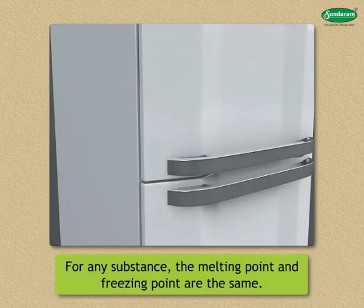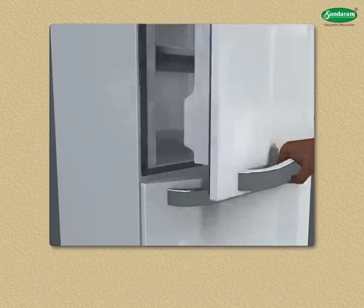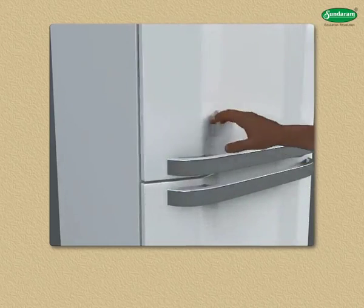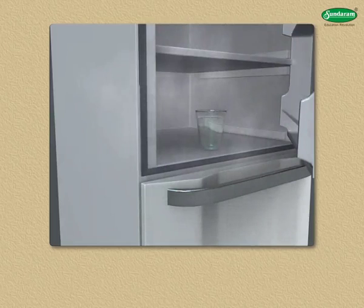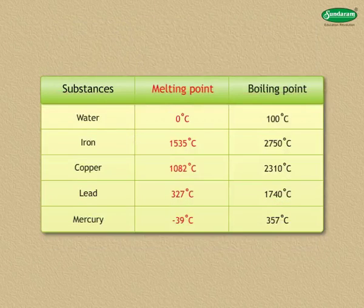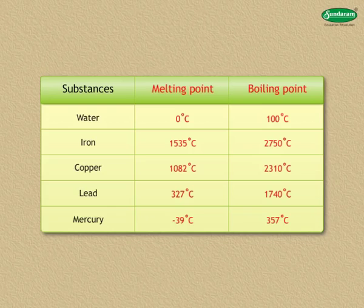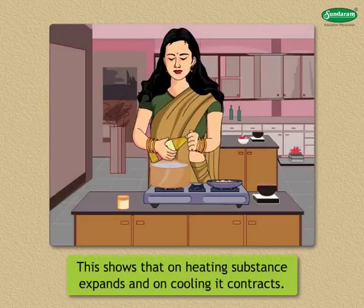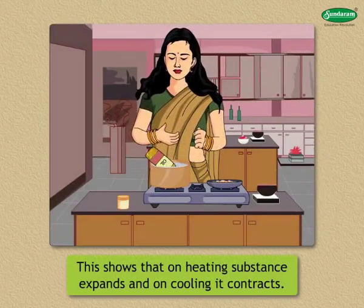For any substance, the melting point and freezing point are the same. Freezing point is the temperature at which a liquid substance changes into a solid when heat is taken away from it. The melting point and boiling point of some substances are given here.